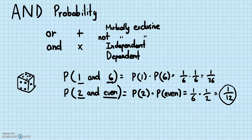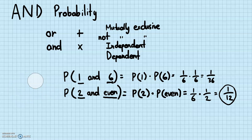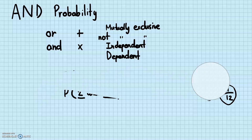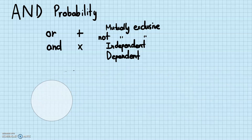So for independent events, you just multiply the probabilities of the two events together. Now, dependent events are a little bit more complicated.